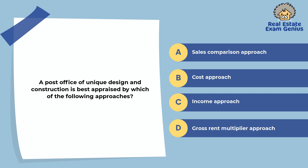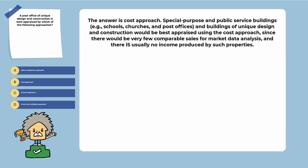A post office of unique design and construction is best appraised by which of the following approaches? Sales comparison, cost approach, income approach, or gross rent multiplier approach. The answer is the cost approach. Special purpose and public service buildings of unique design and construction would be best appraised using the cost approach, since there would be very few comparable sales for market data analysis and there is usually no income produced by such properties.